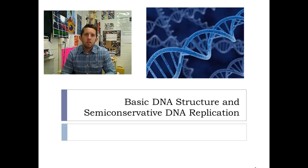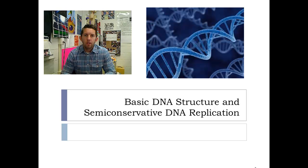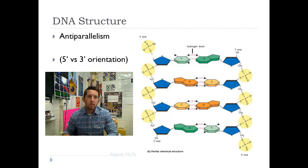This screencast is on basic DNA structure and semi-conservative DNA replication. Cells need some kind of genetic material and some kind of way to replicate themselves, to reproduce. This is how they pass on their genetic material, their genes, to the next generation. We know a little bit about DNA structure as a class so far.